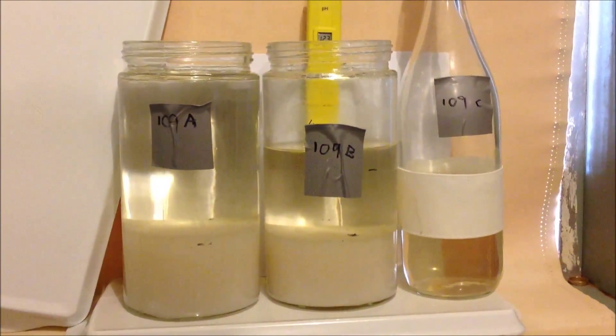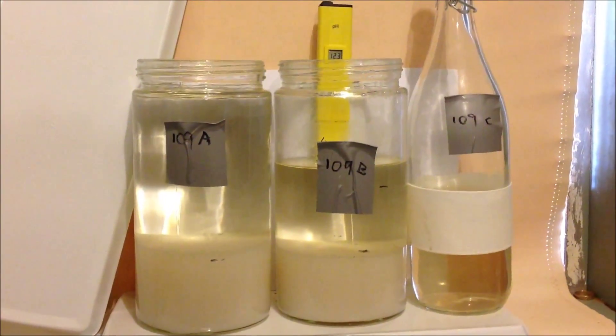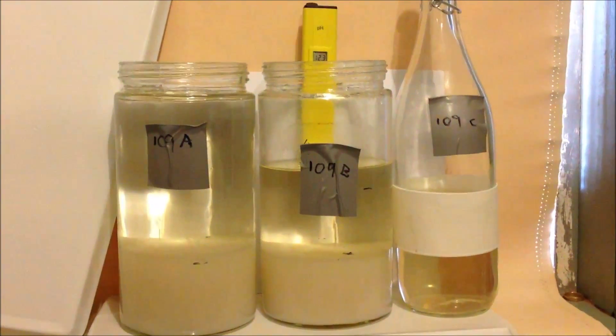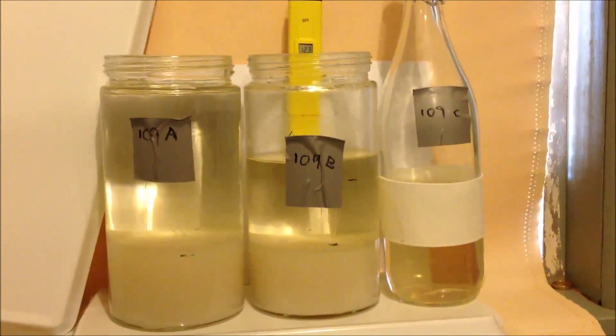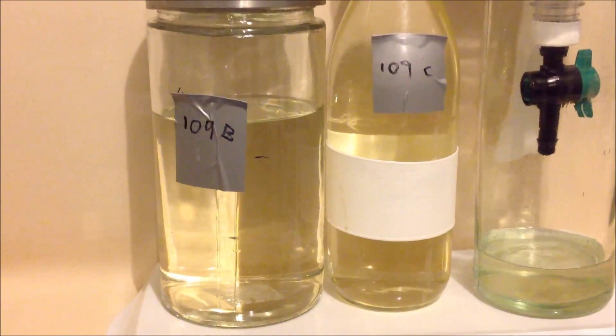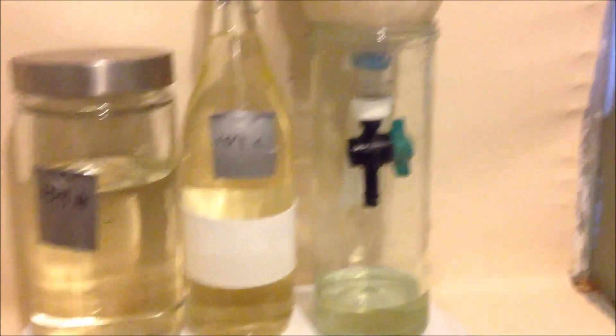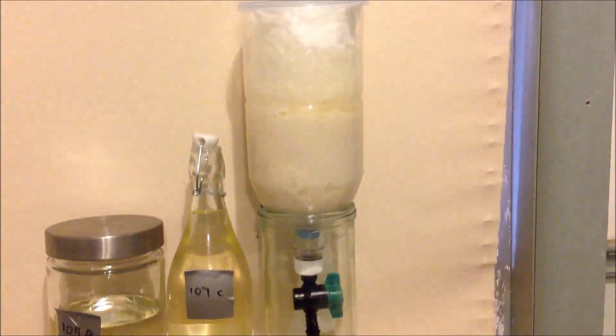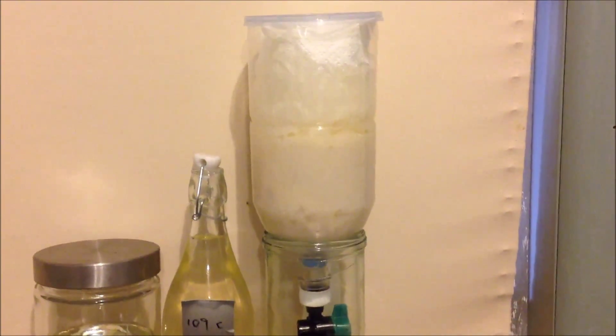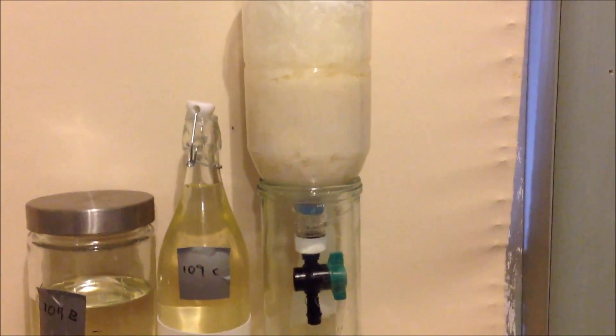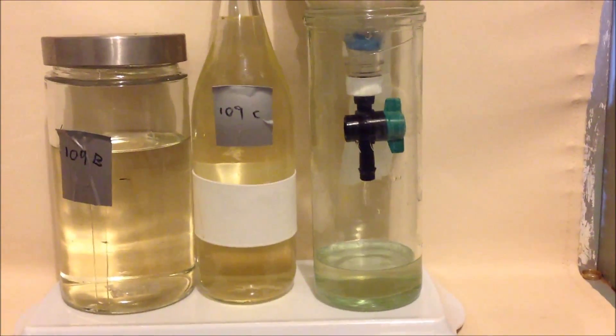For now I'll rack off A and B into the same bottle, then get a precipitate by taking the pH down again. All the liquid's been racked off and stored. I've got an upside-down cordial bottle with filter paper and I've put all the precipitate in there. It will filter through overnight.